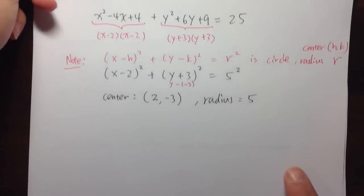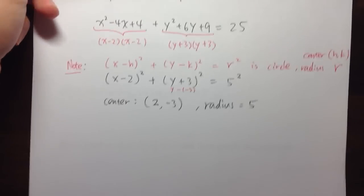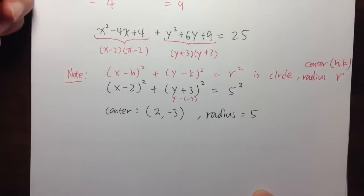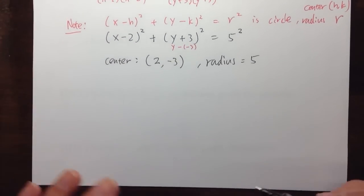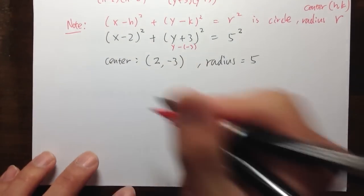To graph a circle, we need to know the center and the radius — that's the key. And now we can just do the graph.